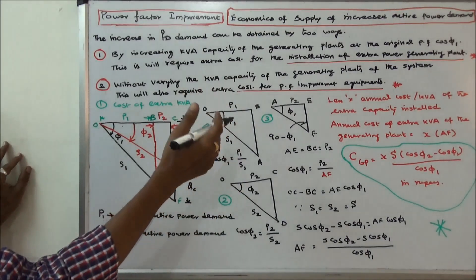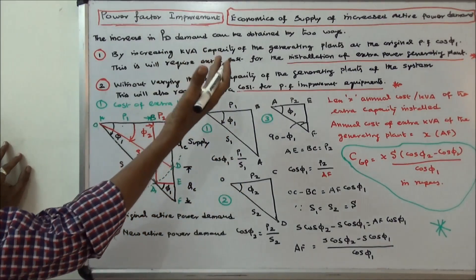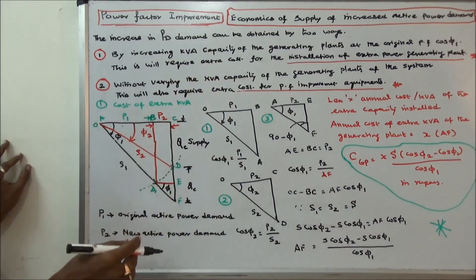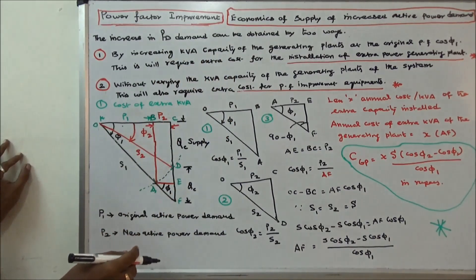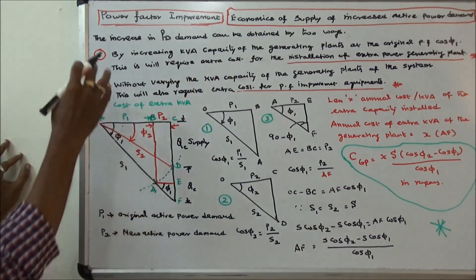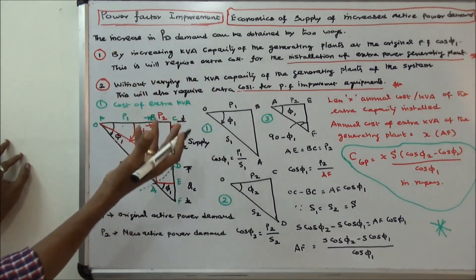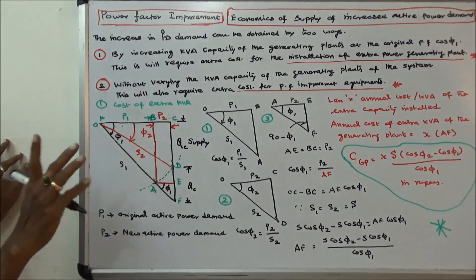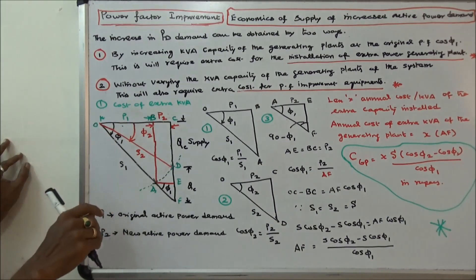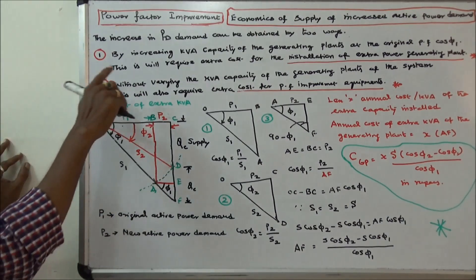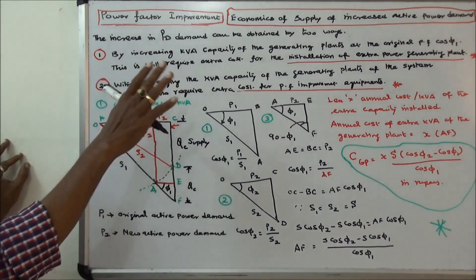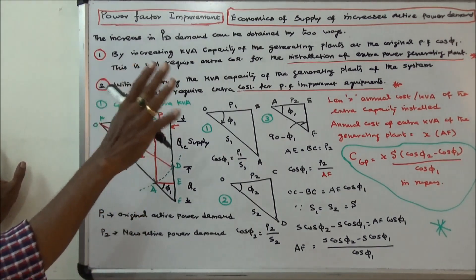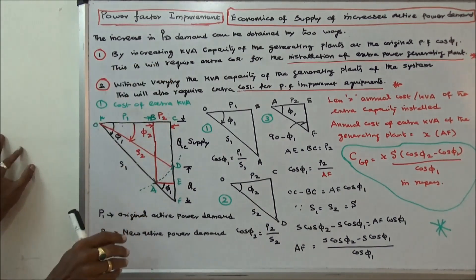In this class, we discuss the economics of supply of increased active power demand. The increased active power demand can be obtained by two ways. The first way is by increasing kVA capacity of the generating plants at the original power factor cos phi 1.